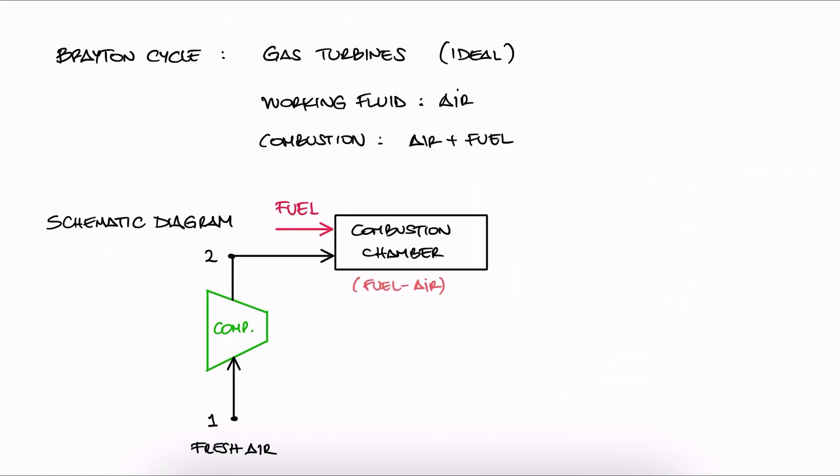The process inside the combustion chamber is assumed to happen at constant pressure. Because of the combustion, we're going to have some combustion products at a higher temperature. We call this stage 3. Those high-pressure, high-temperature products will go into a turbine, and the turbine will exhaust the gases to the ambient.